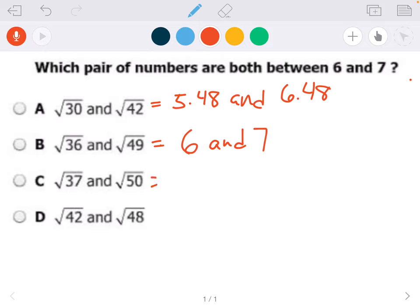C, if I do the same thing, the square root of 37 is 6.08, and the square root of 50, that is 7.07.